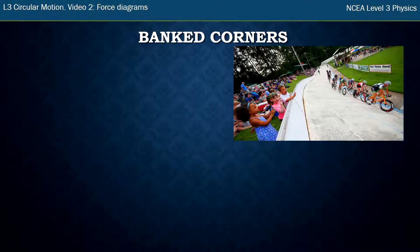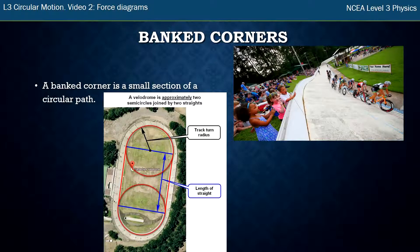A banked corner can happen on a road. Another place you see it quite exaggerated is in a velodrome, where they race cycles around this big circuit. The corners in a velodrome are banked, and the design consists of two circular sections joined by straight sections. So the ends, the corners, are semicircles — circular motion on an angle. So we've got banked circular motion.